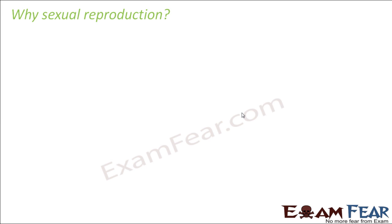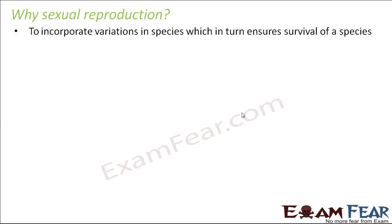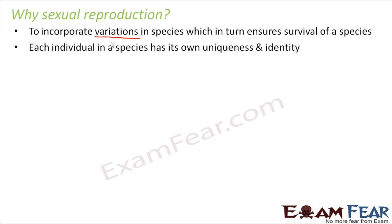Now the question is why sexual reproduction? When we already had asexual mode of reproduction, what was the need? It was good enough that one parent alone could give rise to new organisms. So what was the necessity? It is to incorporate variations in species, which in turn ensures survival of a species. Variation doesn't come into picture in asexual reproduction because all the organisms are exactly identical to each other. In sexual reproduction, new traits come up with each generation, and that's how it can give rise to new species altogether. These variations are useful to ensure the survival of species.